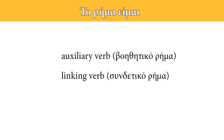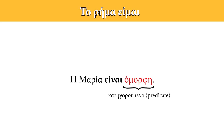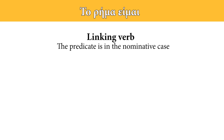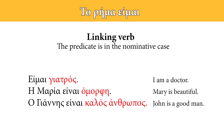It is also a linking verb, which means that it connects the subject of the verb with the predicate. The predicate is a noun, an adjective, or a participle, or even a whole sentence, that gives us additional information about the subject. The predicate of the subject of the verb είμαι is always in the nominative case. For example: Είμαι γιατρός. Η Μαρία είναι όμορφη. Ο Γιάννης είναι καλός άνθρωπος. All the red words are in the nominative case, just like the subject of the verb.